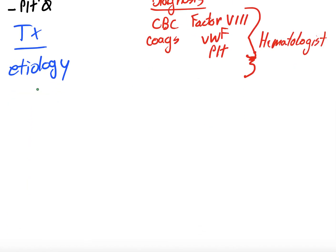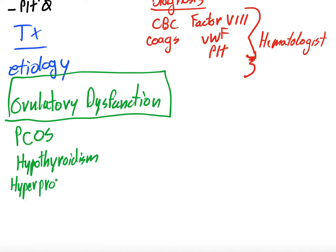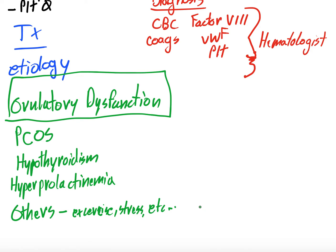Next is ovulatory dysfunction, which is a bucket category for systemic conditions that can disrupt ovulation. Examples include polycystic ovarian syndrome (PCOS), hypothyroidism, and hyperprolactinemia. A whole range of other factors can also contribute: intense exercise, eating disorders, stress, antidepressants, antipsychotics, corticosteroids, and some liver and kidney diseases can all cause ovulatory dysfunction.